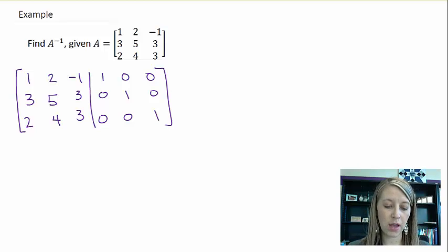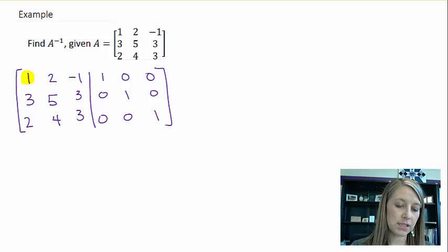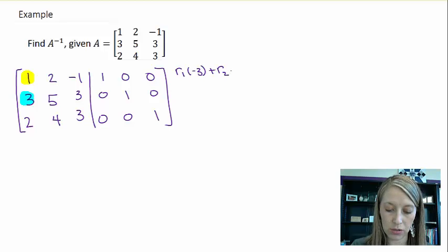So the very first thing that I want to do is get a 1 here in the top left. And lucky for us, that's already done. So the next thing that I want to do is I want to get a 0 right below it. Well, the easiest way for me to get a 0 where that 3 is, is to take row 1 times the negative 3 and add it to row 2. And of course, that's going to be replaced in row 2.